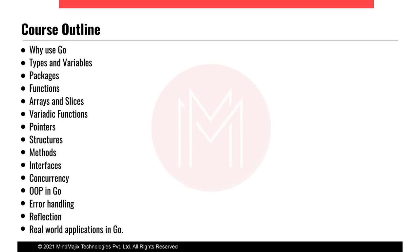This course outline covers three topics in the demo. The entire course covers: Go use cases, types and variables, packages, functions, arrays and slices, variadic functions, pointers, structures, methods, interfaces, channels, concurrency, object-oriented programming in Go, error handling, reflection, and real-world applications. At the end of the session we'll be building real-world applications like HTTP servers, Docker-style command line applications, and more.